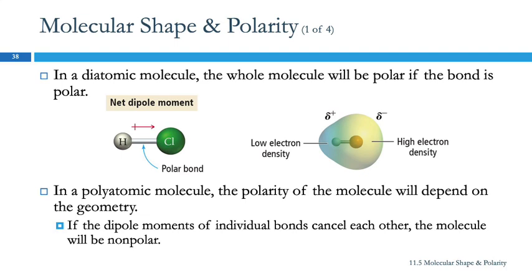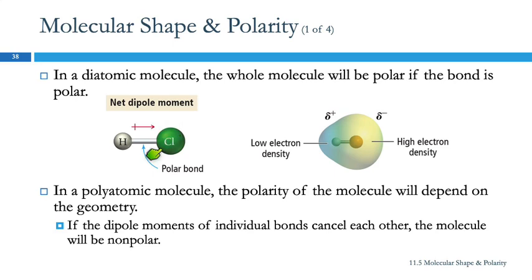Hydrogen has a proton in its nucleus and chlorine has many protons. If they shared time equally it would be a nonpolar bond, but they're not sharing equally — they spend more time near chlorine because it's nicer. So this end is partially negative and that end is partially positive.